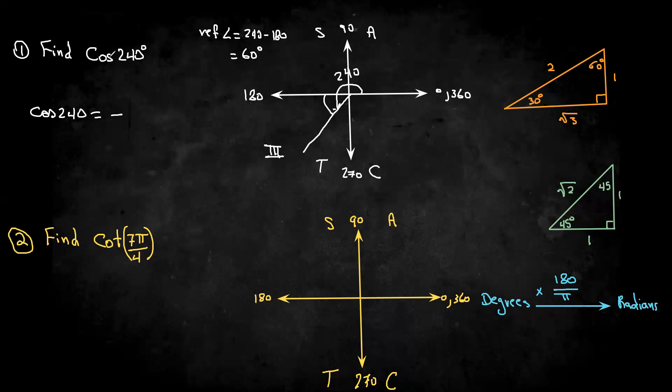And then, since the reference angle is 60, just go to 60 and find out what cos of 60 is from here. Cos 60 is one half, so therefore the answer is going to be negative one half.